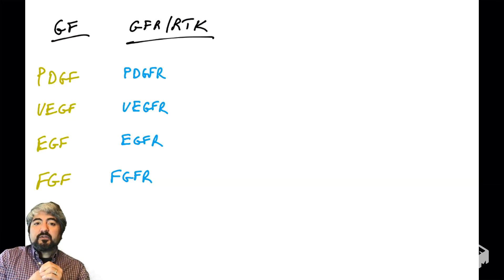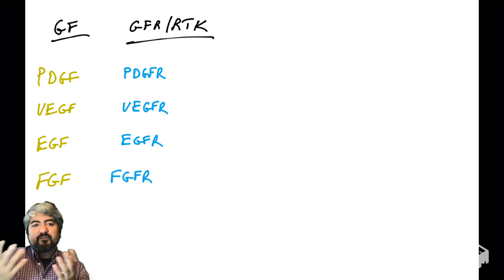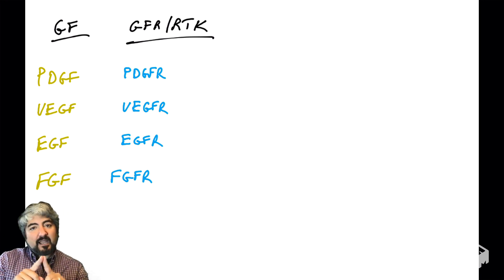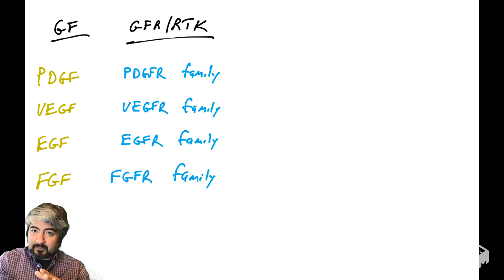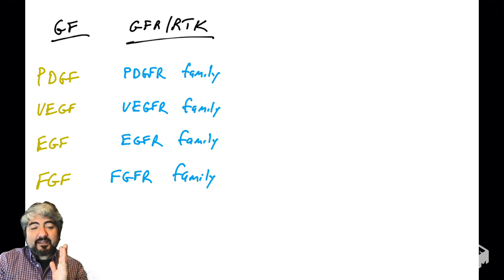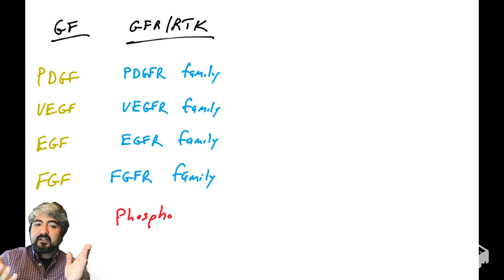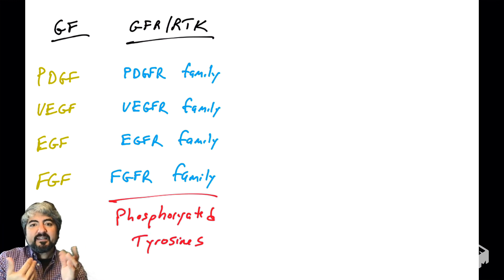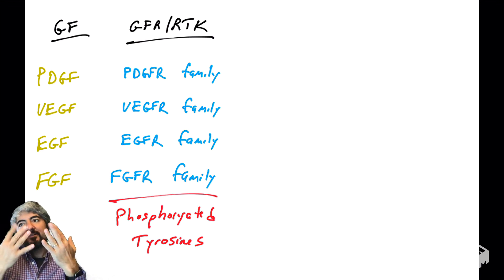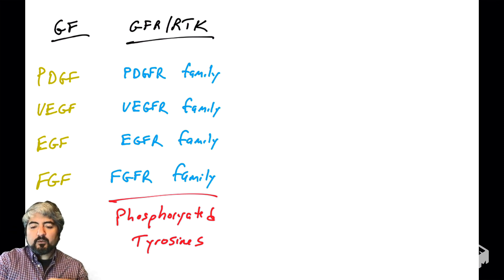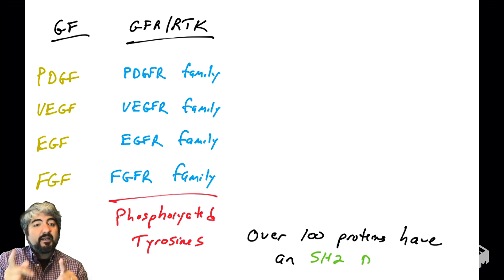Tying this back to previous topics: growth factors like PDGF, EGF, and FGF bind their receptors causing dimerization and transphosphorylation. This is more complicated because there are families of receptors that can homo- and heterodimerize, and different ligands can bind these receptors. But the end result of most signaling through receptor tyrosine kinases is phosphorylation of the tails on tyrosine, creating new protein-protein interactions that trigger cascades of signals inside the cell. Over 100 different human proteins have SH2 domains.